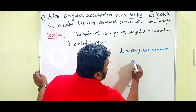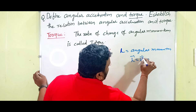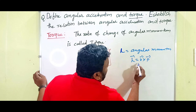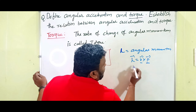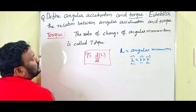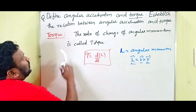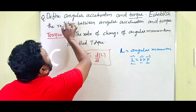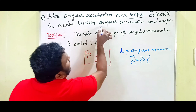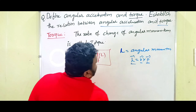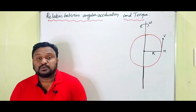The angular momentum L can be expressed as L = r × p, where r is the position vector and p is the linear momentum. Now we can proceed to the derivation of the relation between angular acceleration and torque.